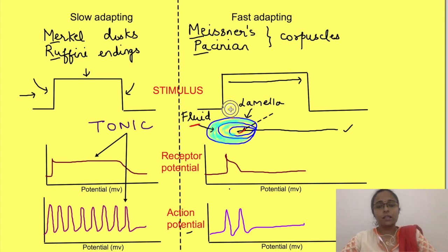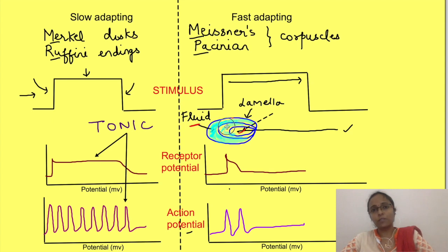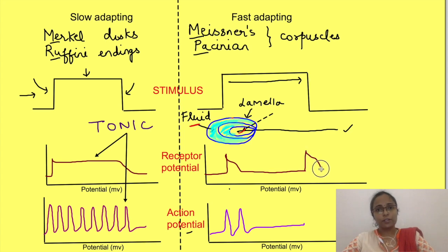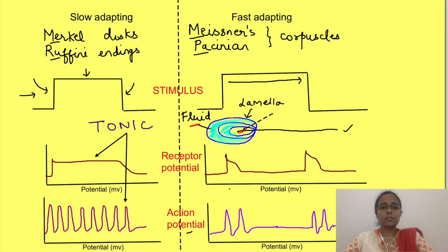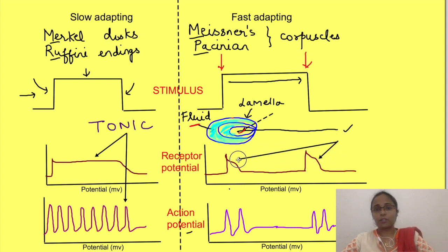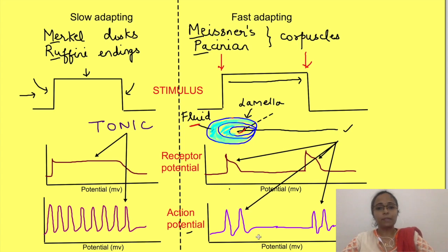When the stimulus is removed, the lamellae come back to their original position, thus disturbing the fluid which has settled down. This disturbance again causes opening of the ion channels, leading to generation of action potential when the stimulus is removed. Thus fast adapting receptors detect the stimulus when it comes and then when it goes. Because of this phasic response which occurs when the stimulus is coming and going, the rapidly adapting receptors are also known as phasic receptors.